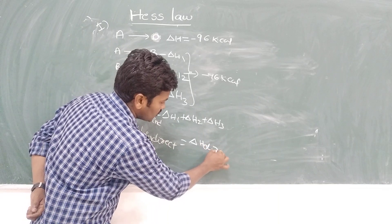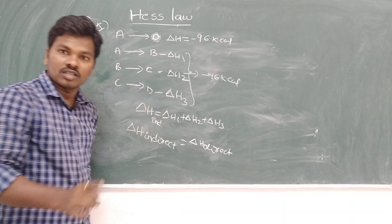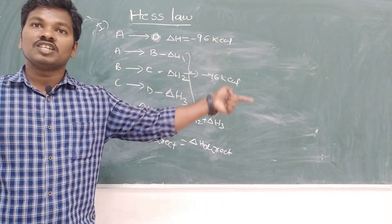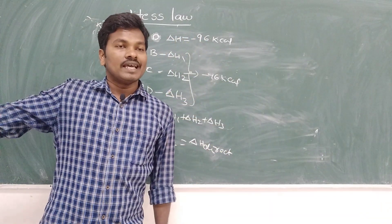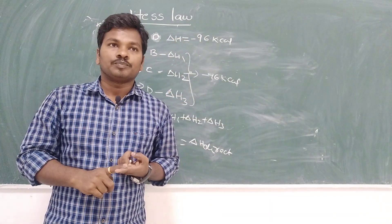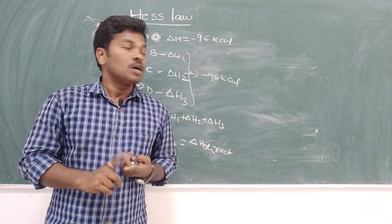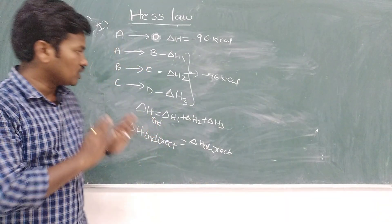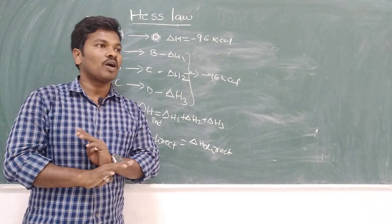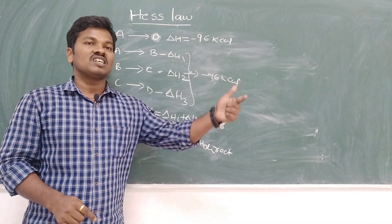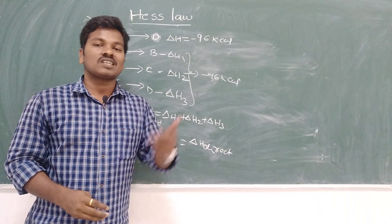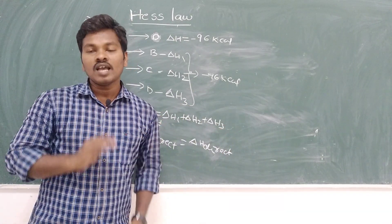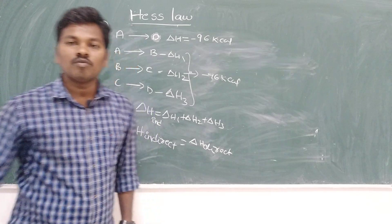The enthalpy obtained from the indirect method is always the same as that from the direct method — there is no difference. The path may be different, but there is no change in enthalpy. This is because enthalpy is a state function. Whether the reaction takes place in a single step or a hundred steps, there is no change in enthalpy.